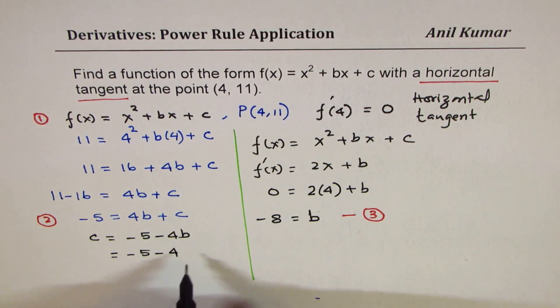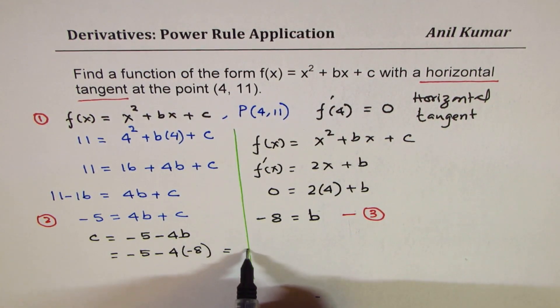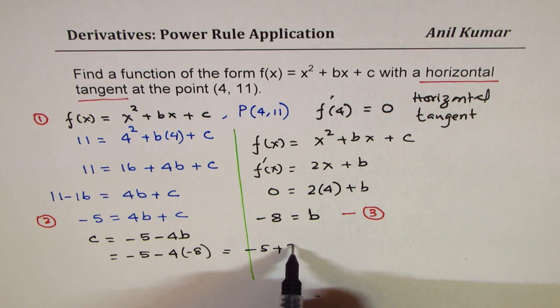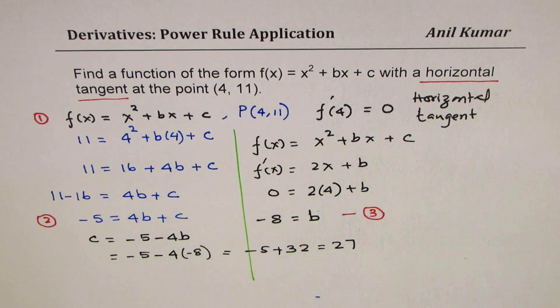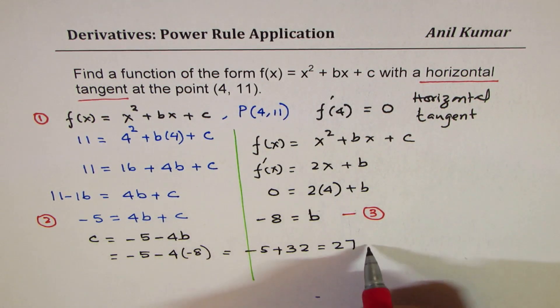-5 - 4(-8). And this could be written as -5 + 32, which is 27. So you get the value of c. We will call this equation 4.